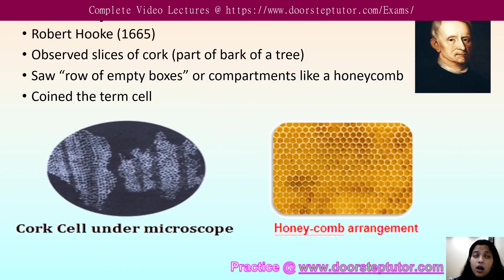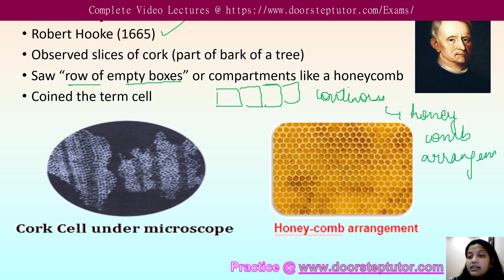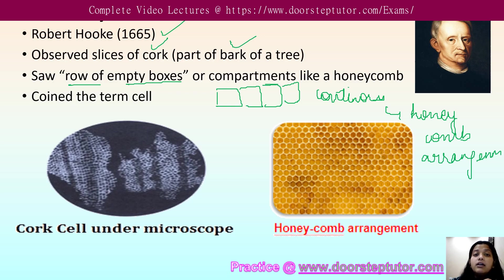Cells were discovered by Robert Hooke. He was able to see that the body is made of cells — rows of empty boxes combined together forming a continuous network. He referred to this continuous network as a honeycomb structure or honeycomb arrangement. He observed these cells in the bark of a tree, specifically in the cork. Robert Hooke was the one who coined the term 'cell' and gave these empty boxes that name. This is what he observed under the microscope.